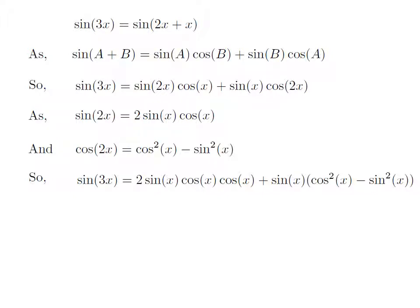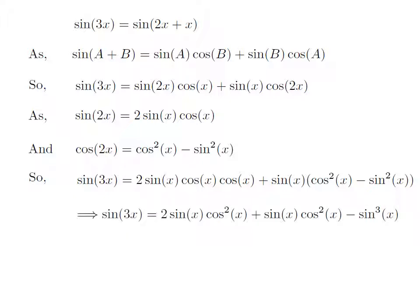Applying the above two identities, sine of 3x is equal to 2 times sine of x into cosine of x into cosine of x, plus sine of x into the whole of square of cosine of x minus square of sine of x. Simplifying, sine of 3x is equal to 2 times sine of x into square of cosine of x minus cube of sine of x.